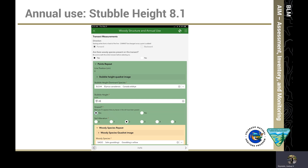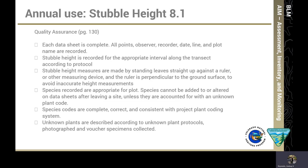In electronic data collection using the Survey123 application on a tablet, this is where you record stubble height in the woody structure and annual use form. You can see in the middle of the screen you first record the dominant species — in this case Eleocharis canadensis — then record the average leaf height and mark whether it is grazed, yes or no. Make sure you're following the checklist at the end of the section on page 130, reviewing it each time you measure stubble height to ensure quality data.